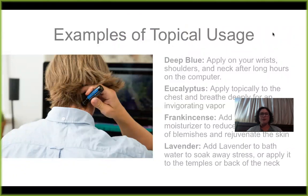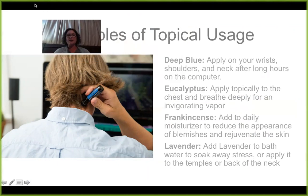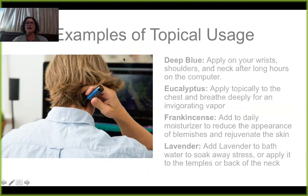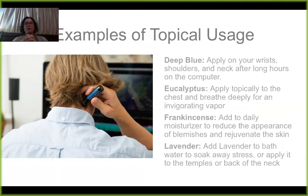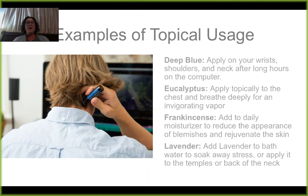Here are some examples of topical usage with our different products. Deep Blue is amazing — you can apply it to your wrists, shoulders, and neck after long hours on the computer. People who get a tight jaw like to apply it right along the jawline. Deep Blue comes in a Deep Blue Touch and a straight-up Deep Blue roller. Eucalyptus can be applied topically to the chest and breathed deeply for an invigorating vapor — I personally love the Breathe blend. Frankincense is a profoundly powerful skin oil and a go-to for everything — you can add it to your moisturizer to reduce the appearance of blemishes and rejuvenate the skin. Add lavender to bath water to soak away stress, or apply to the temples or back of the neck.